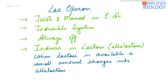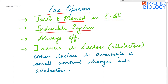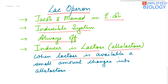Now let's study the operon in detail. Lac operon was given by Jacob and Monod in E. coli. It's an example of the inducible system, which is always off. The inducer here is lactose, or an isomer of lactose called allolactose. When lactose is available, a small amount of it changes into allolactose, which acts as the inducer.